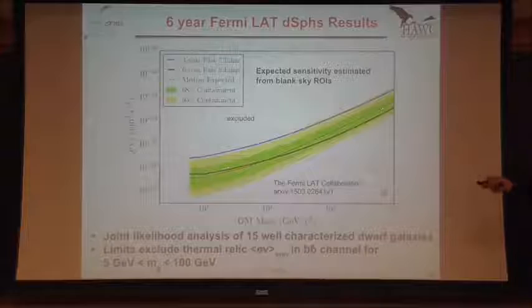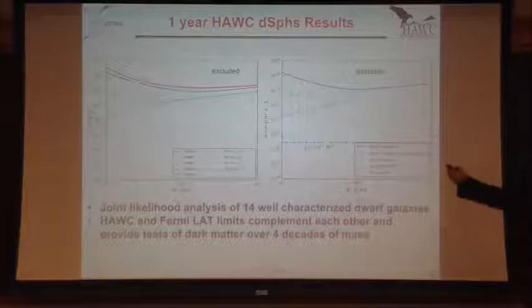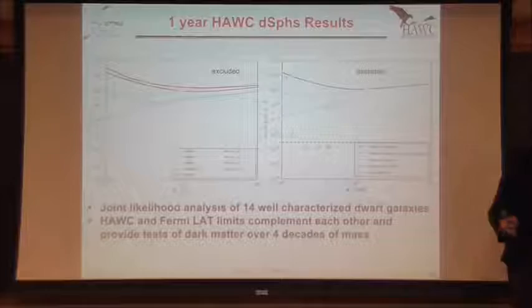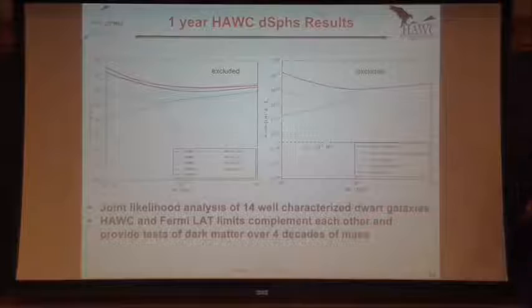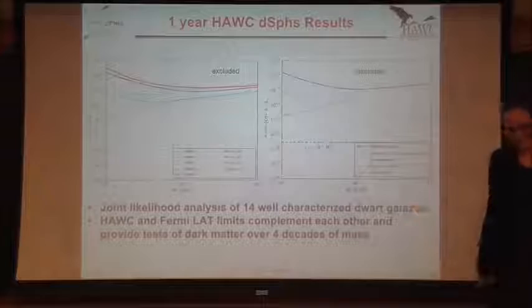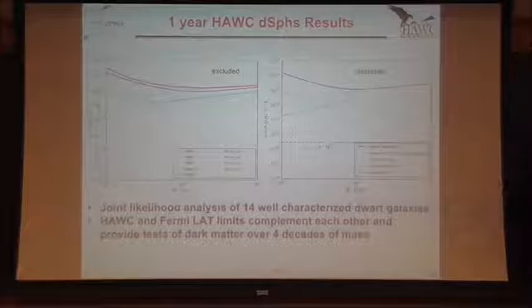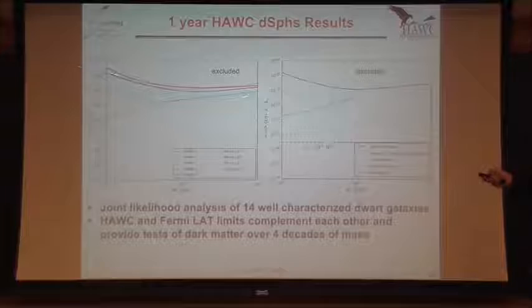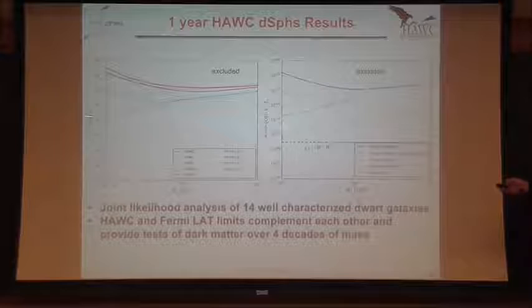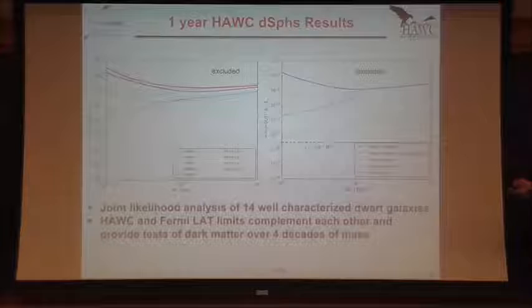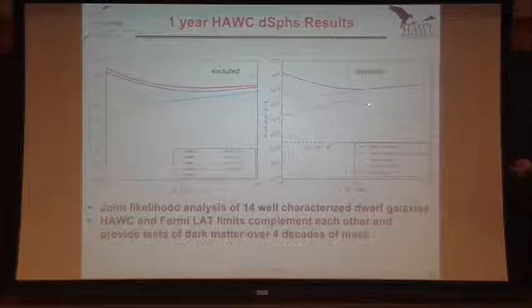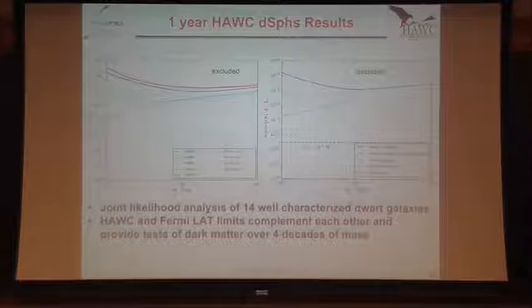We can also do a stacked dwarf analysis using HAWC. These dwarfs are scattered all over the sky, but as a survey instrument we're already observing all of them with similar exposure all the time. Here are the limits from HAWC in the cross-section mass plane for various channels — the dashed lines are limits from Fermi. You can see how complementary both experiments are. In the WW channel, HAWC limits are starting to be pushed down into the region where we might expect a signal from Sommerfeld enhancement. If you want to interpret the galactic center signal as dark matter, the mass and cross-section would have to fall in certain contours — and the dwarf limits are starting to be in tension with those signal interpretations.